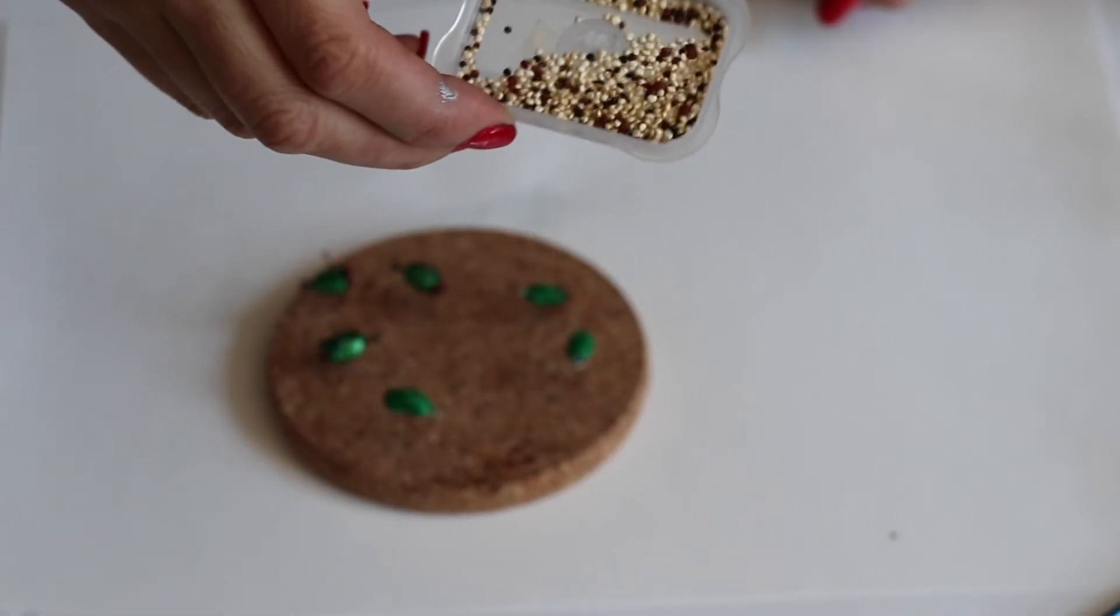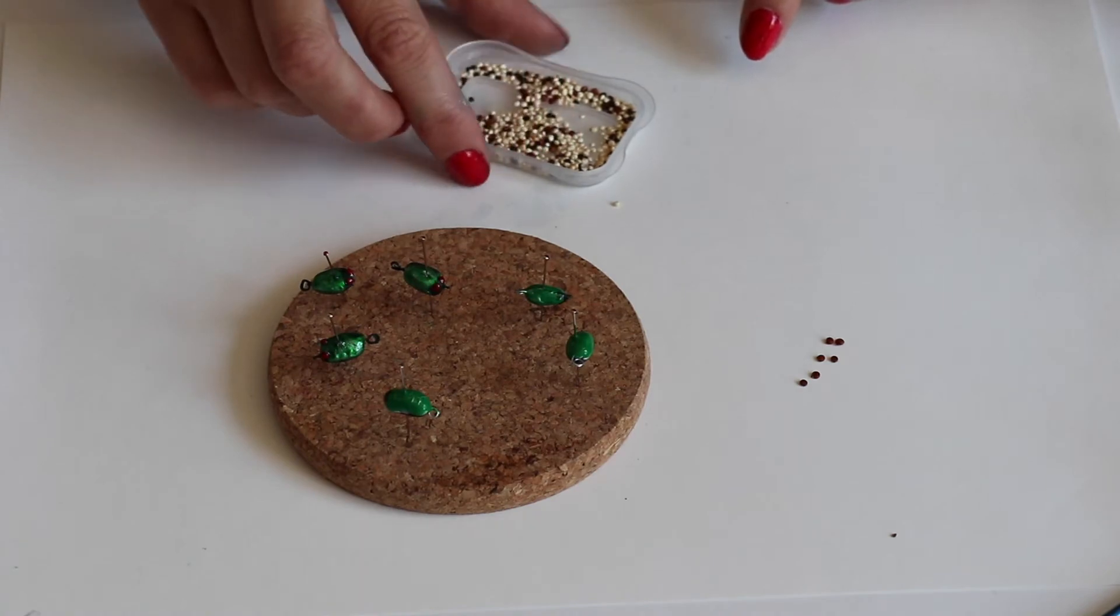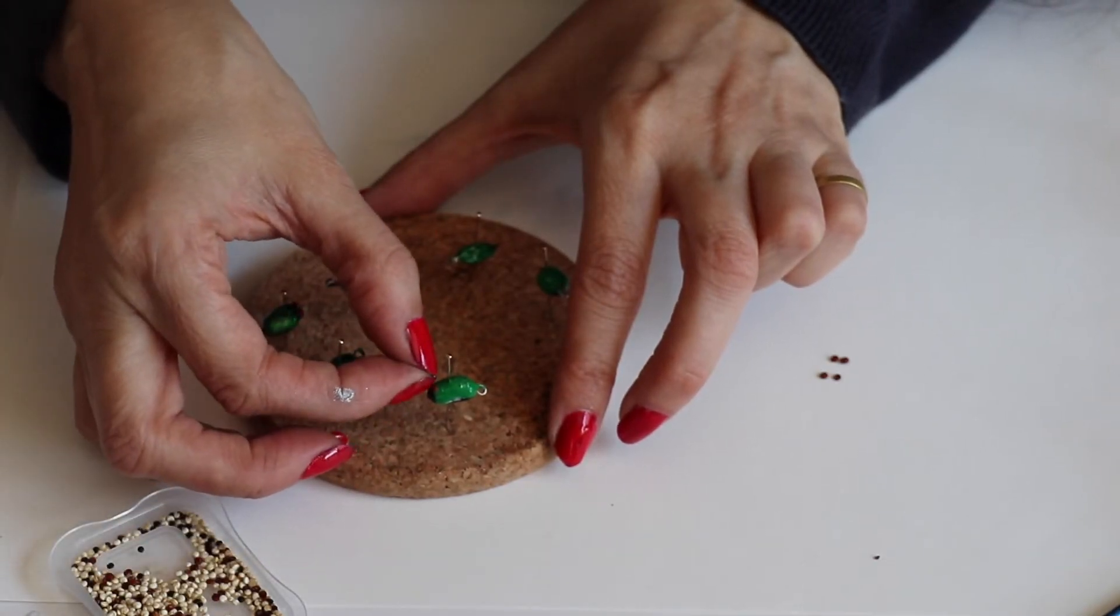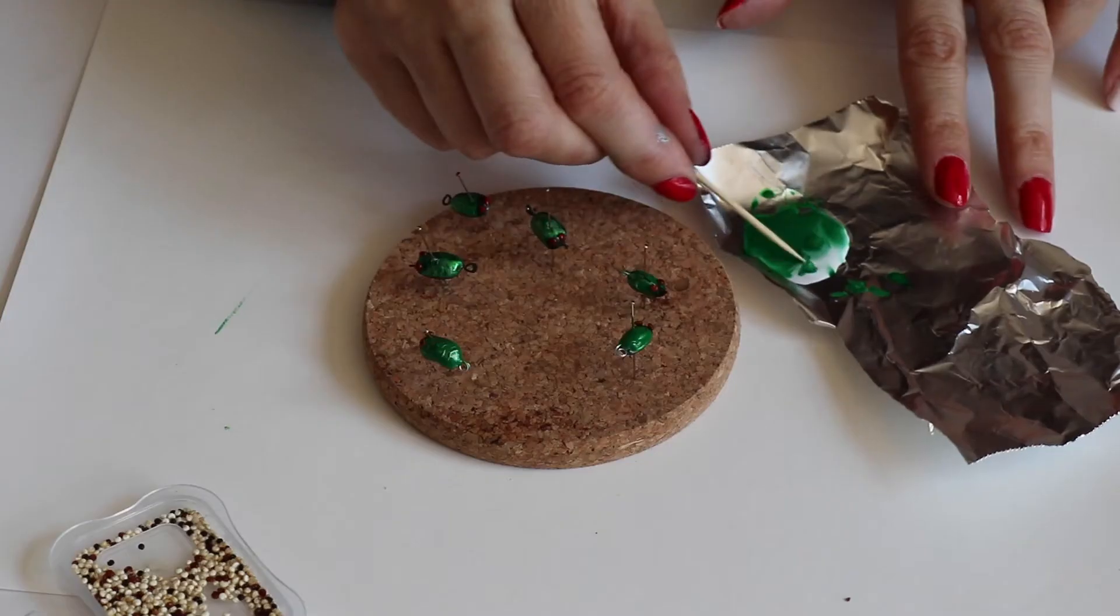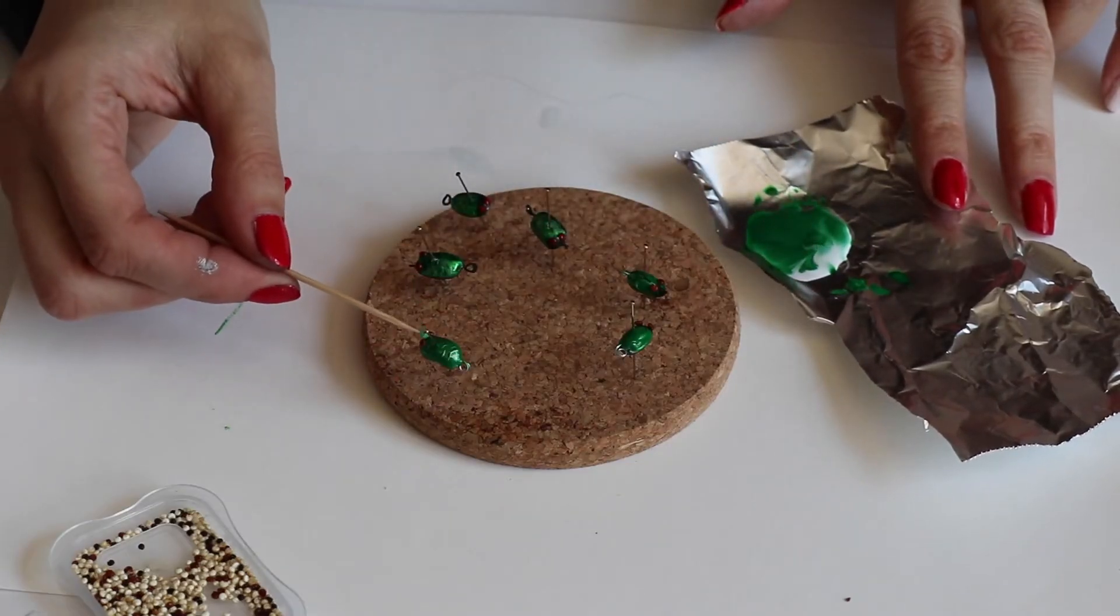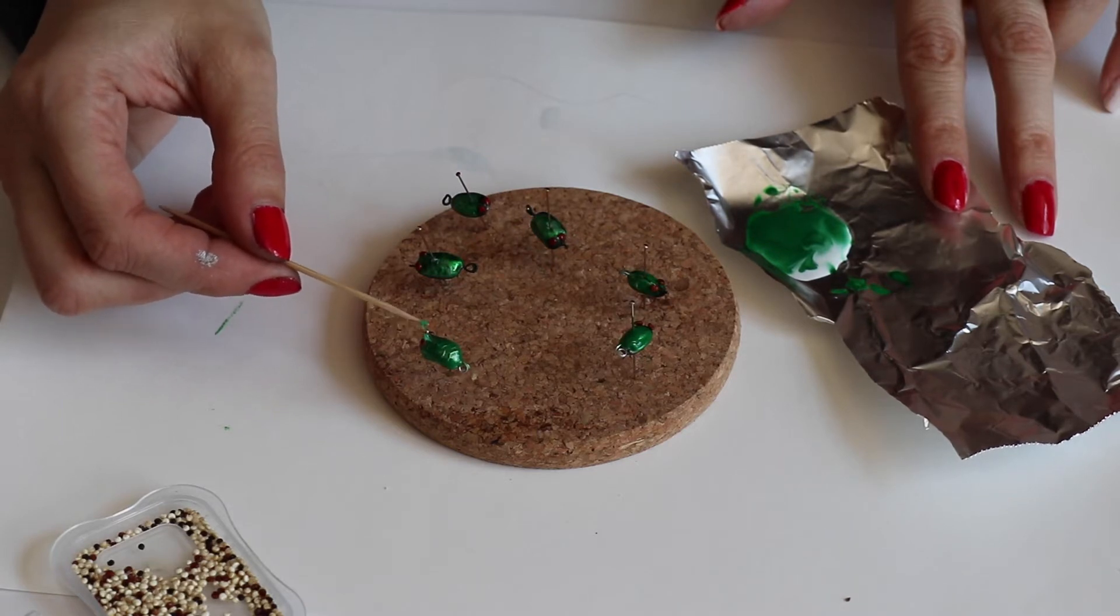I use red quinoa for the eyes. Pick out the biggest pieces that you can find. While the glue is still wet, place each eye on the black heads. With a toothpick, place extra drops of glue around the eyes to ensure that the eyes won't fall off.